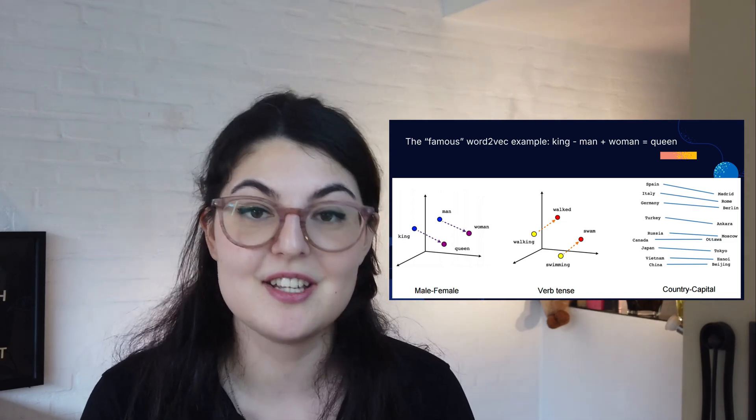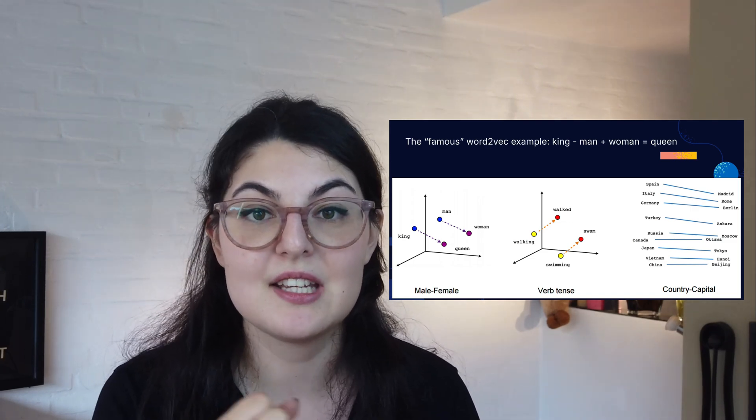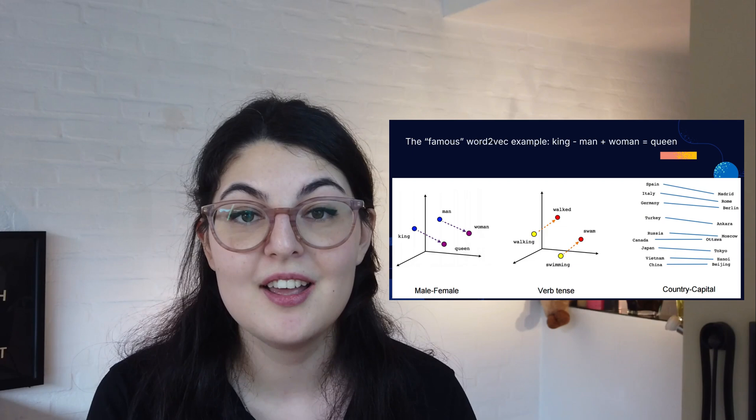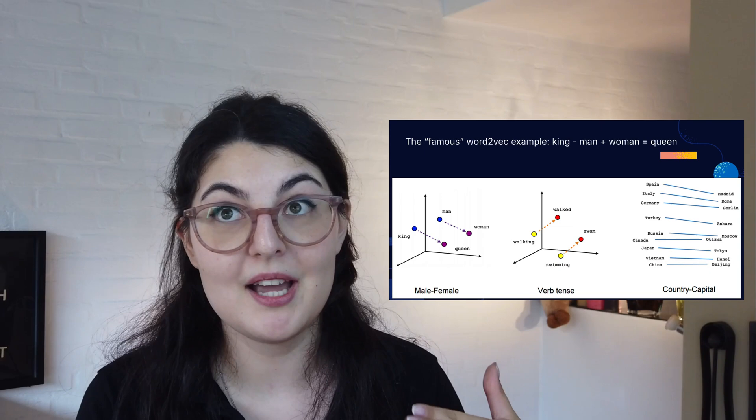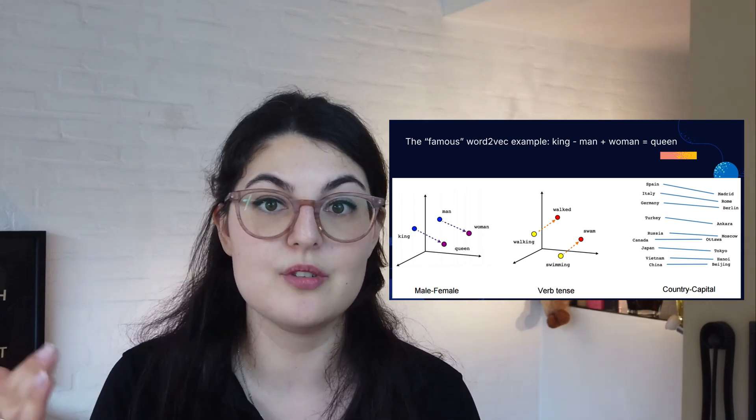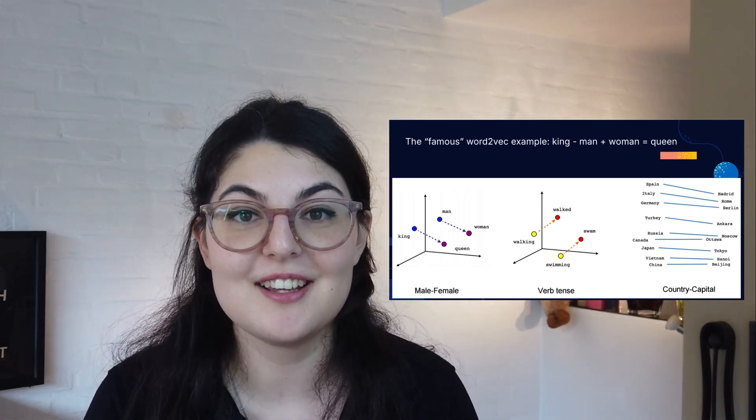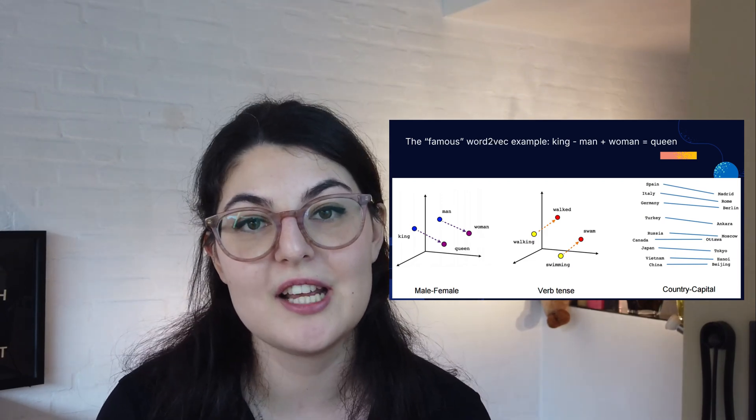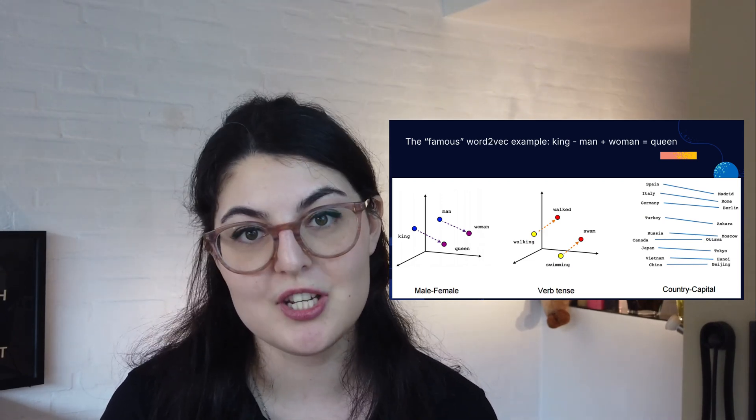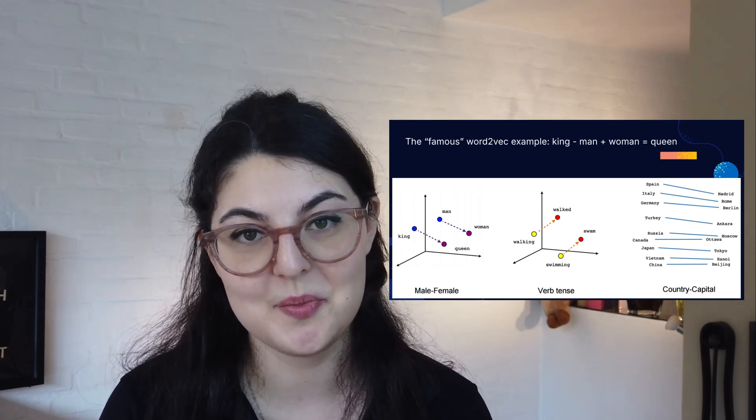This allows us to have the understanding of closely semantically related words. To give a very 2015 example, we had the idea that king and queen might be together in the semantic space, but we also had operations such as king minus man plus woman equals queen, which is a very rudimentary understanding of how language works and how those words are related, but something that really helped machines progress towards this NLP space.